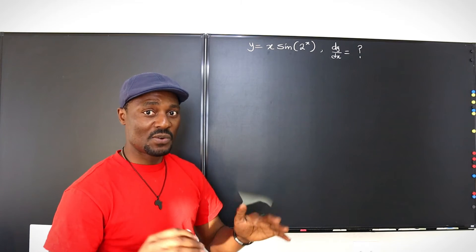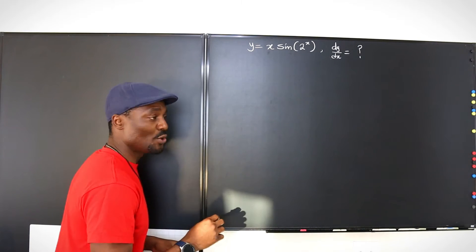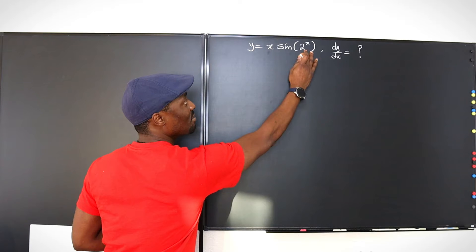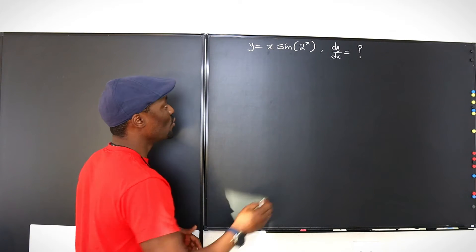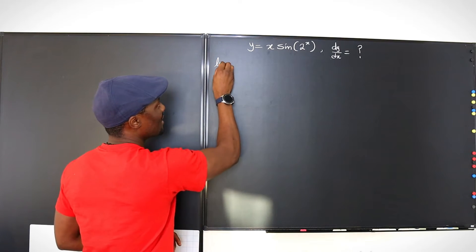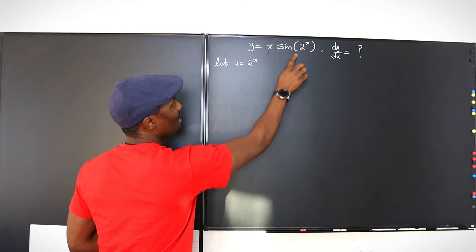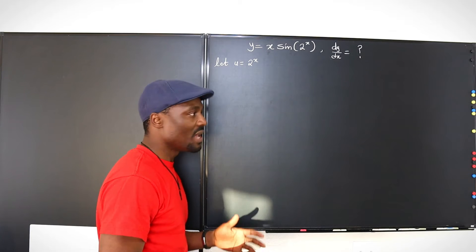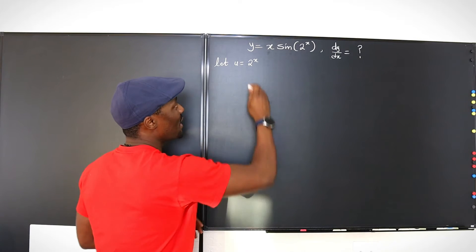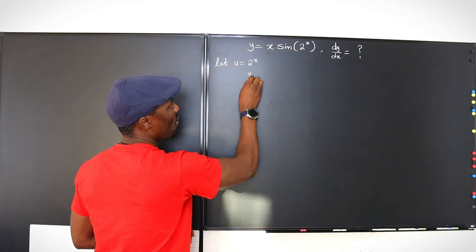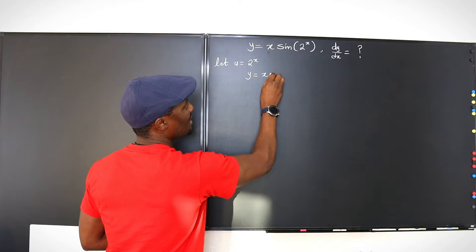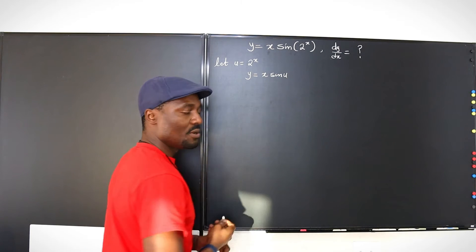So in order for us to go ahead, I'm just going to show you the general rule that is applied whenever you're doing this. So I'm going to go here and say let u be equal to 2 to the x because this requires some extra step. That's why I'm going to start that way. So we can rewrite our problem and say that y is equal to x sine u.